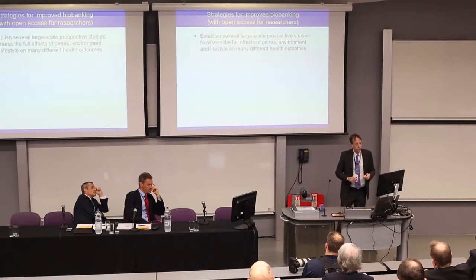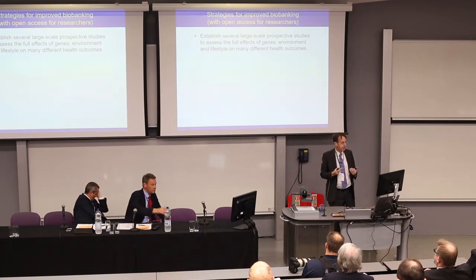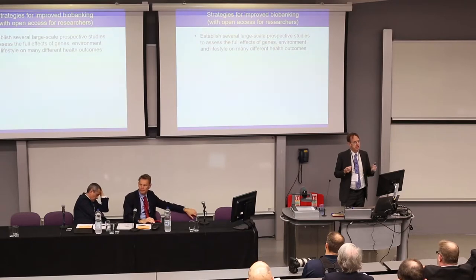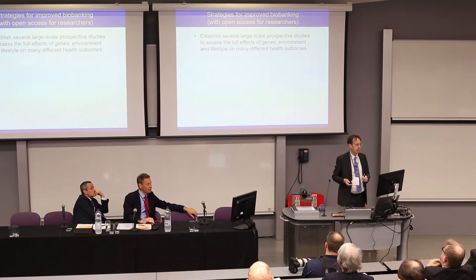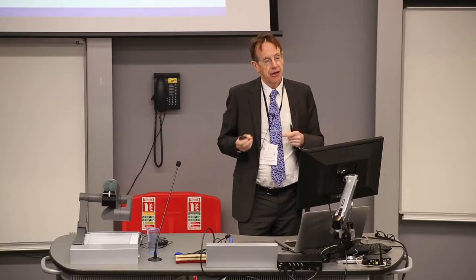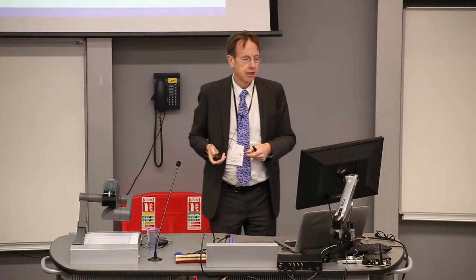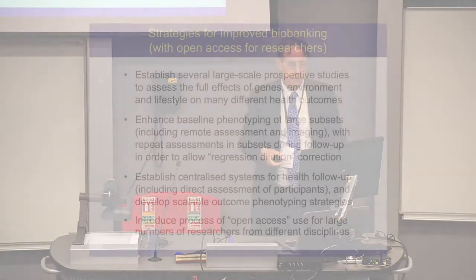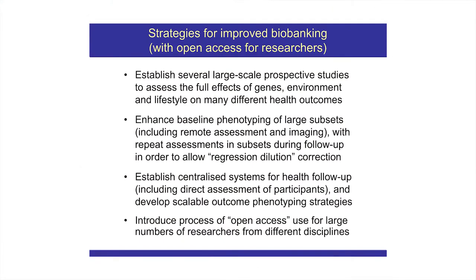In thinking about how to improve research opportunities in these cohorts, the key requirements are: establishing several large-scale cohorts in different environments, with very detailed phenotyping at least in large subsets, with repeat assessment over time to account for variation in risk factor levels, and with centralized approaches to identifying and phenotyping health outcomes in detail — since the problem with prospective cohorts is that linking to health record systems often doesn't provide sufficient detail about outcomes.